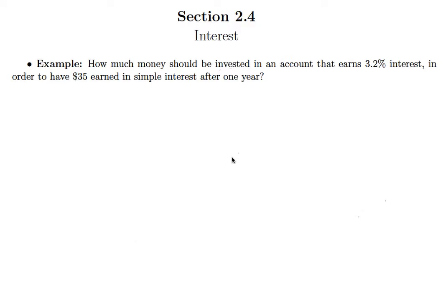In this example we're asked how much money should be invested in an account that earns 3.2% interest in order to have $35 earned in simple interest after one year. So we're again working with our formula I equals PRT.